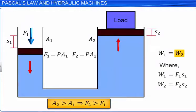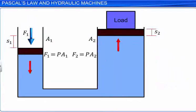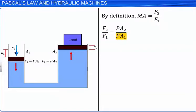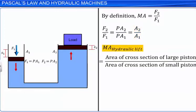The work done by the smaller force equals the work done by the larger force, as the displacement of the smaller piston is greater than that of the larger one. The force F1 applied on the smaller piston is called the effort, and F2, the force required to lift the heavy object, is called the load. The mechanical advantage of a hydraulic lift is the ratio of load F2 to effort F1. Substituting F2 = PA2 and F1 = PA1, the mechanical advantage equals A2/A1 — the ratio of the cross-sectional area of the larger piston to that of the smaller piston.